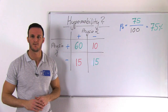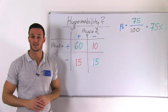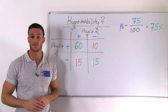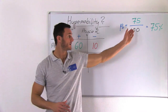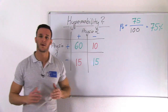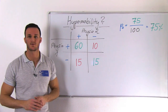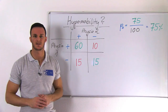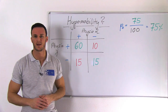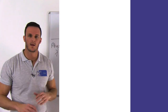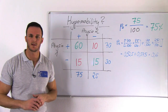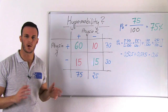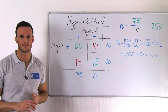It is calculated by the agreement that is actually present, called observed agreement, compared to how much agreement would be expected by chance, called expected agreement. The expected agreement is calculated with the following formula.